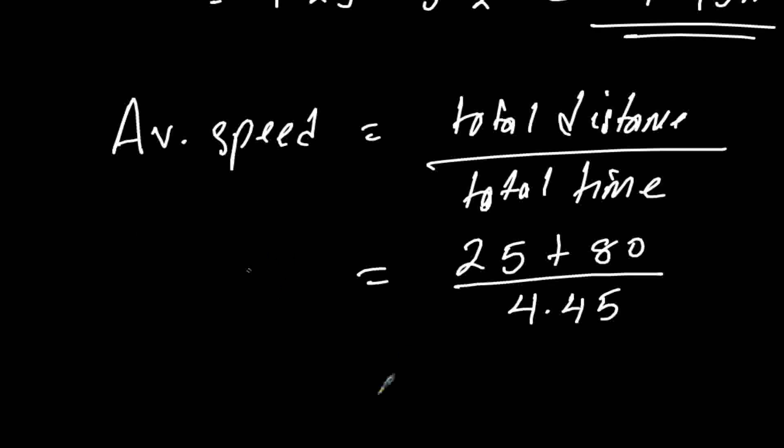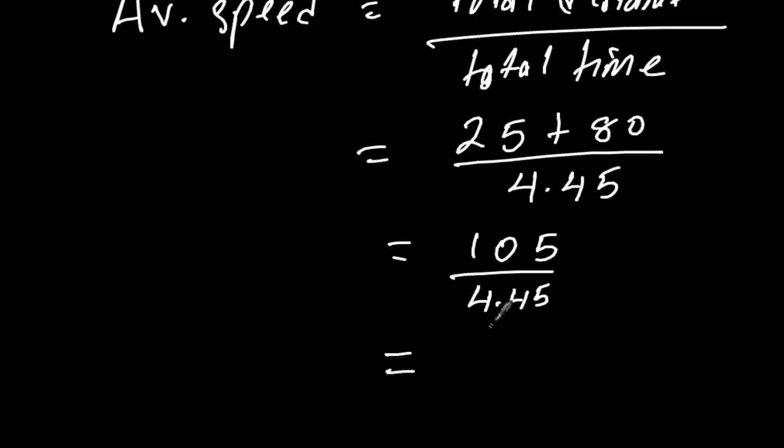So this is 105 divided by 4.45. 105 divided by 4.45 gives us 23.6 kilometers per hour to one decimal place.